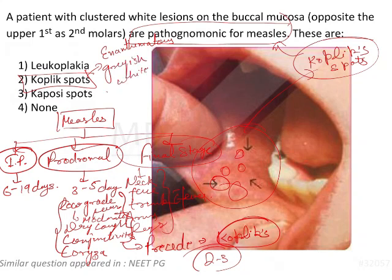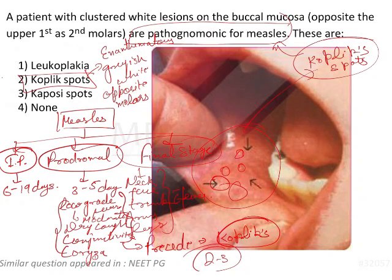Koplik's spots are generally seen on the buccal mucosa opposite the molars — generally the first and second molars on the mandibular side. This is the key pathognomonic feature of measles and that is going to be Koplik's spots.